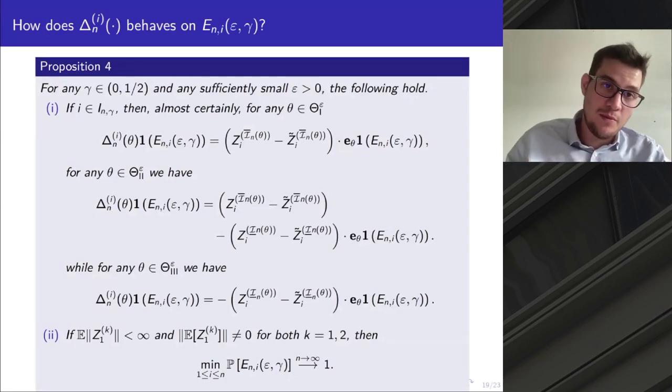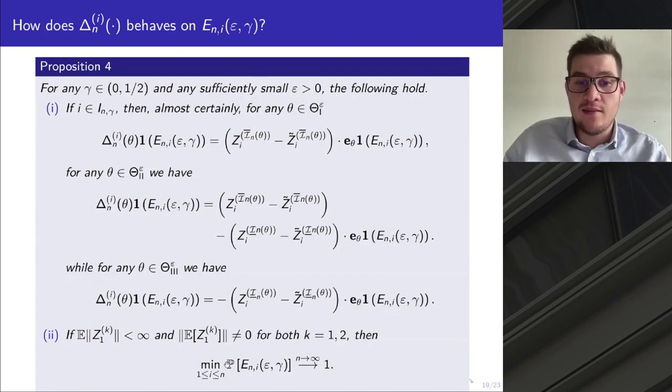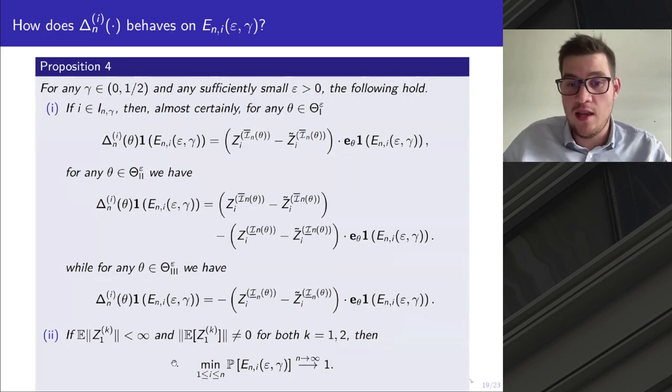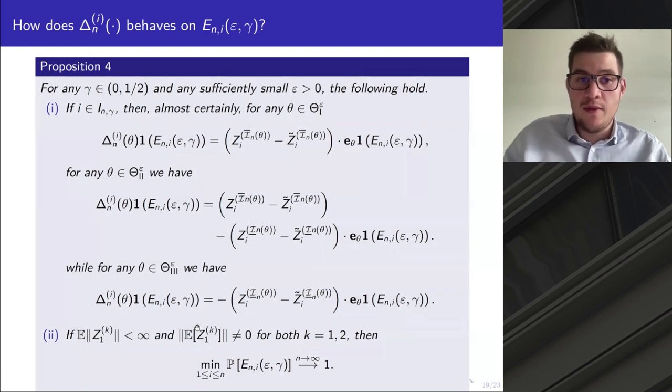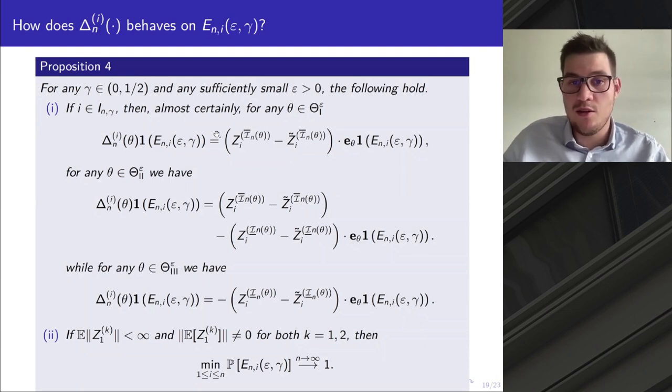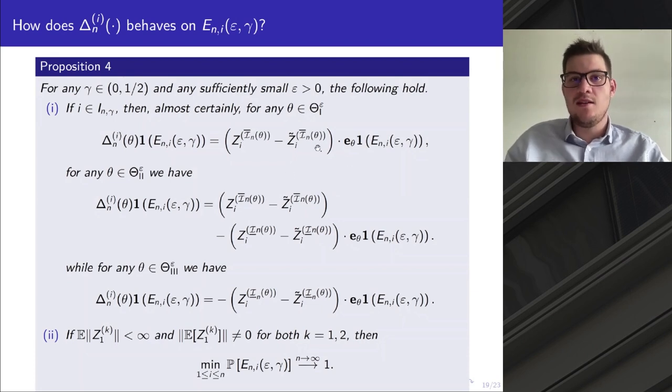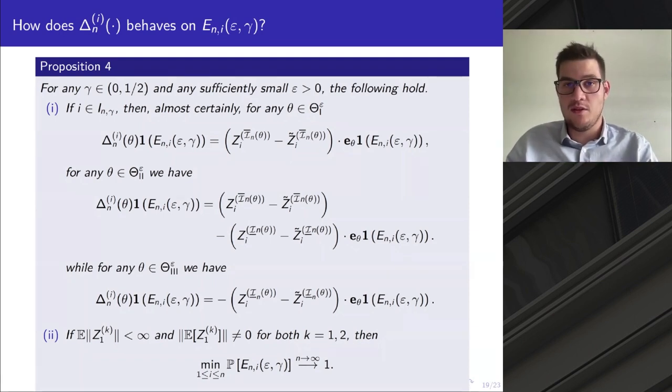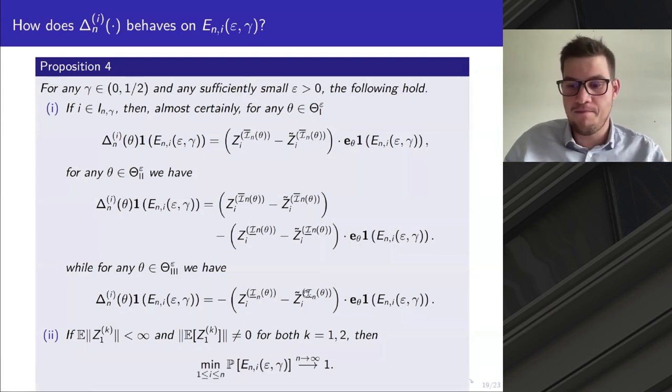That's basically the statement of this proposition. This proposition is a fundamental proposition in this work. The second claim of this proposition is basically what I've just told you—E(n,y,ε,γ) is an event of approximately large probability. It turns out to be approximately 1 as n tends to infinity. Furthermore, we have the behavior of this δnyθ depending on which θ you are on. For example, if we are on θ from the set of angles of the first kind, we can expect that the parameterized range function changes just as the change of the yth variable projected on the corresponding direction. The same logic applies in all three cases.